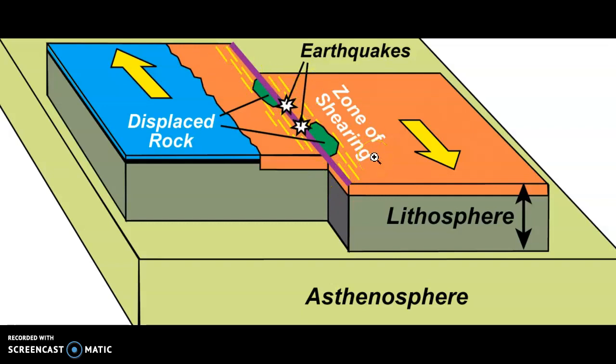This diagram on the screen is showing both plates moving in different directions, but sometimes in reality the plates can actually move in the same direction, except one plate is moving faster than the other. I will show you that just now.